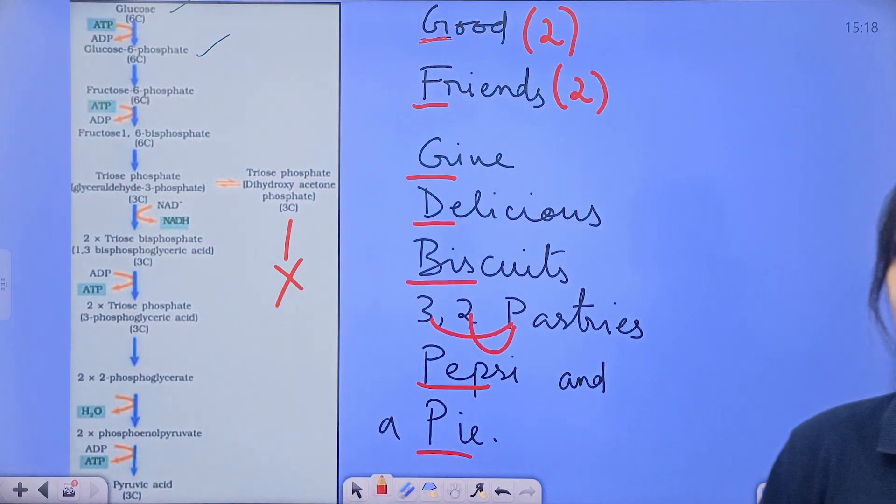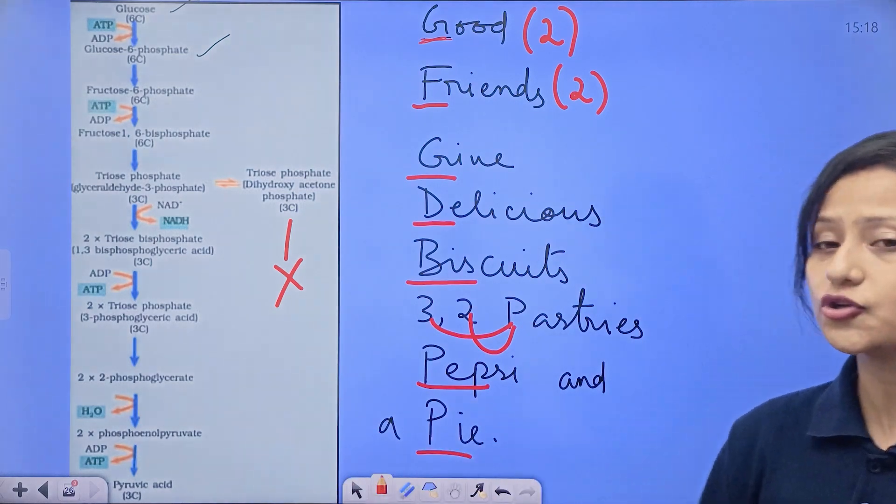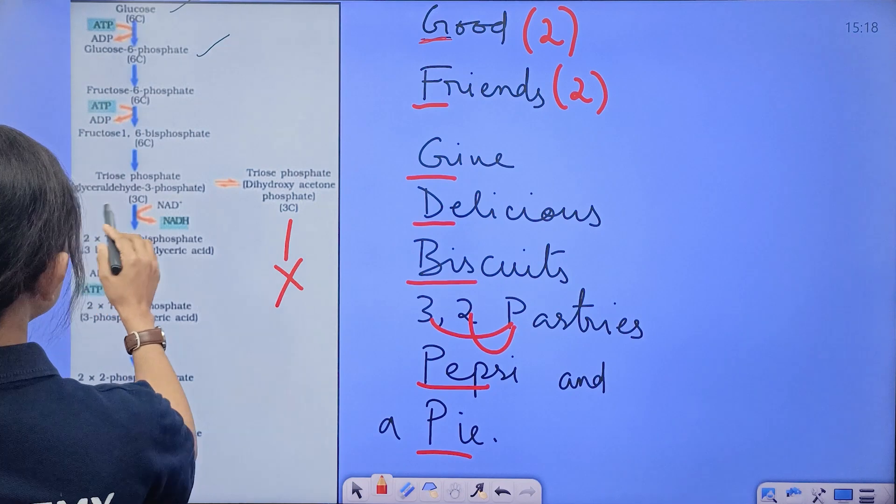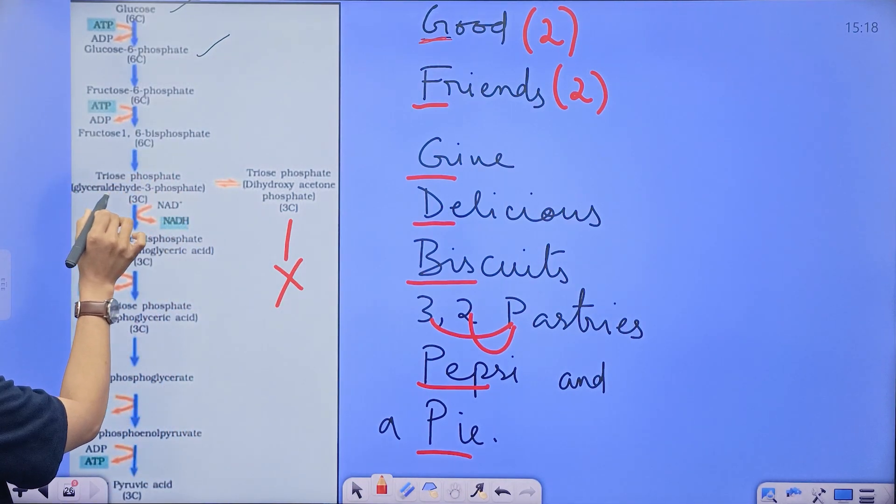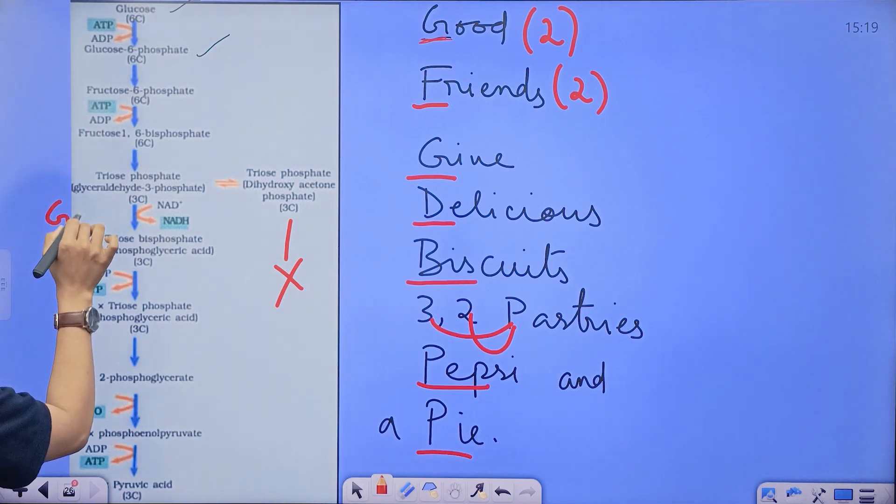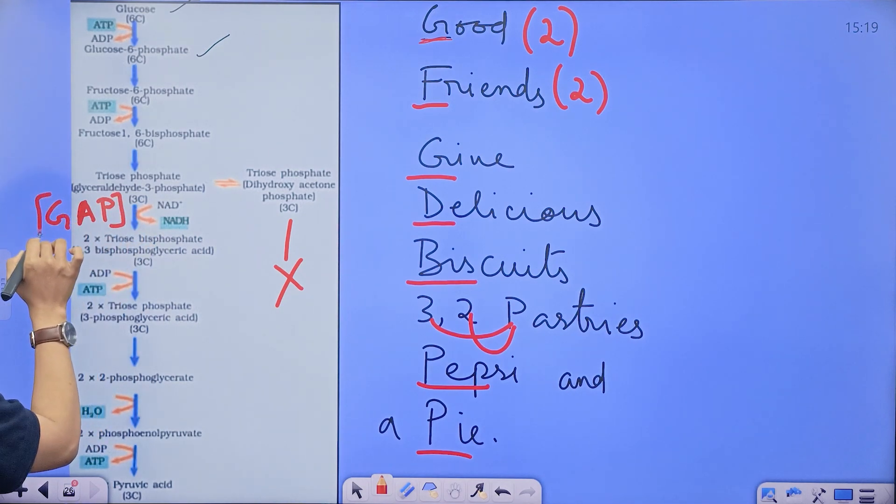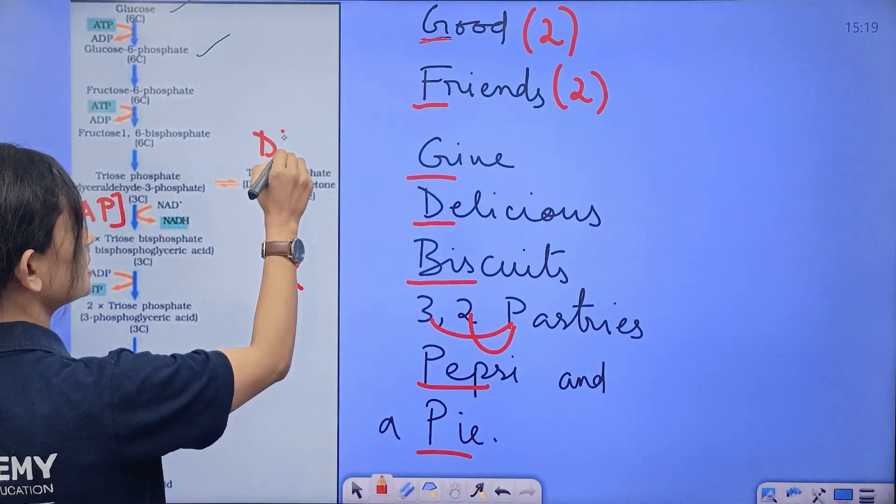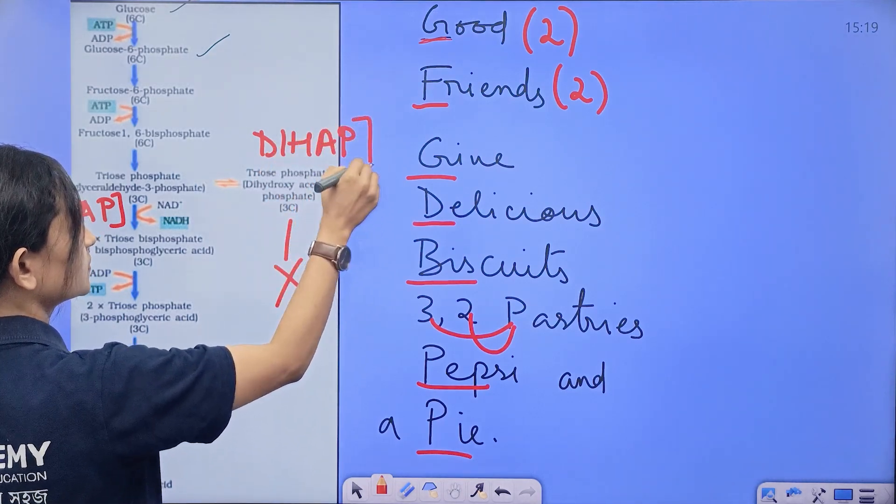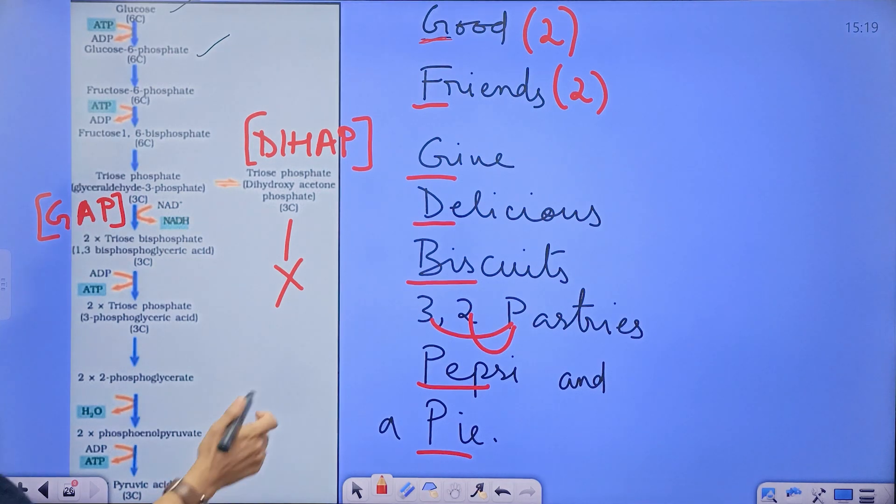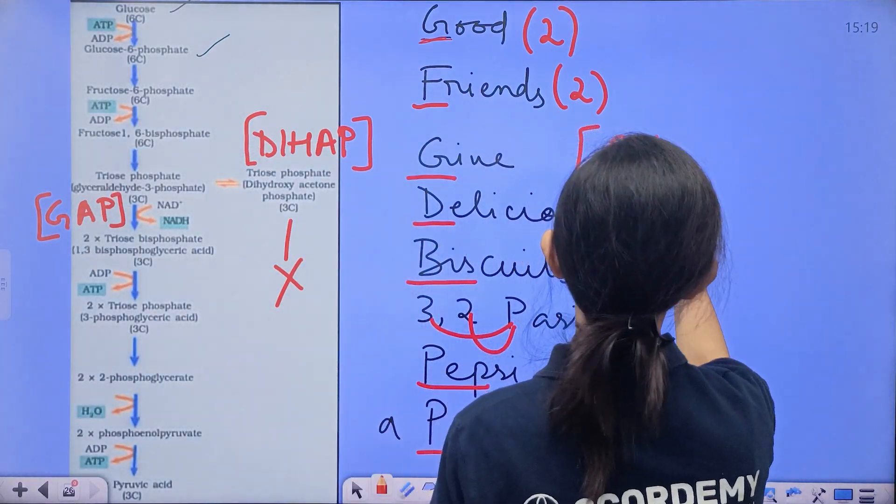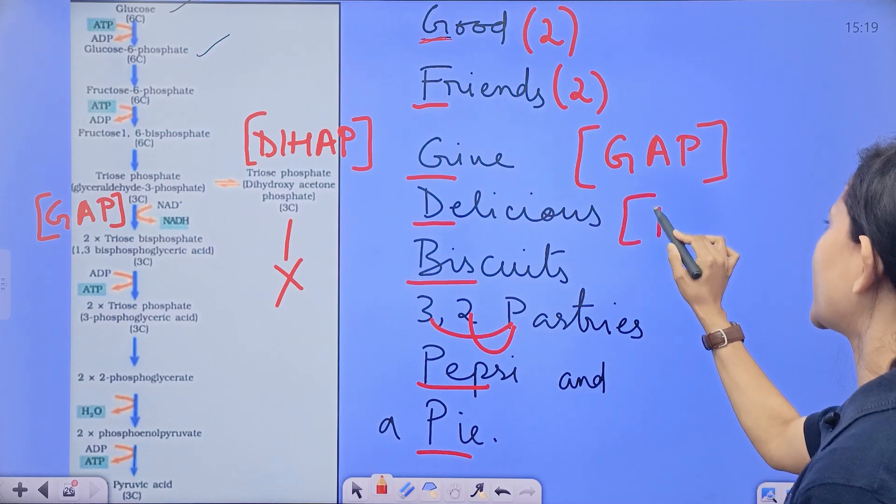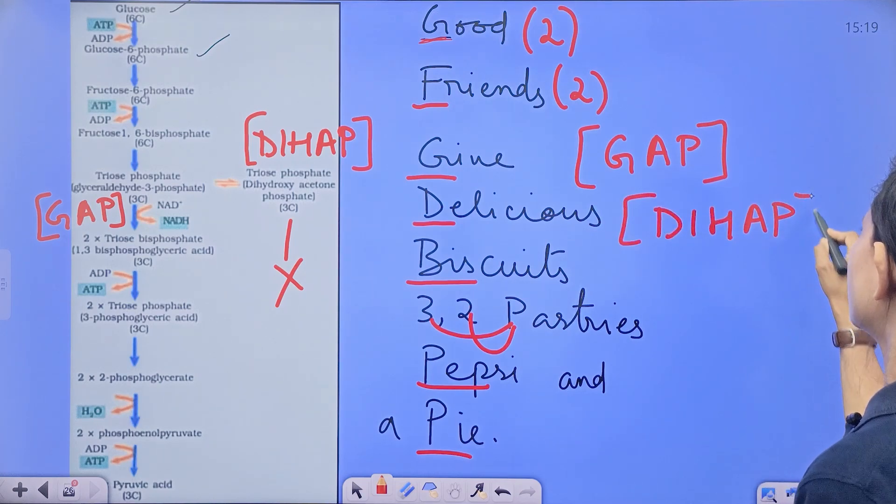Again there are two products as I have said: F for fructose 6-phosphate and fructose 1,6-bisphosphate. The fructose 1,6-bisphosphate divides into two reversible compounds. One starts with G, another starts with D. Here we can write glyceraldehyde 3-phosphate. Can I write GAP? Glyceraldehyde 3-phosphate. And dihydroxyacetone phosphate, can I write here DIHAP? These are the short forms of these compounds. So G for GAP and D for DIHAP. So I'm writing here GAP so that you can remember the whole name, DIHAP whole name you can remember easily.